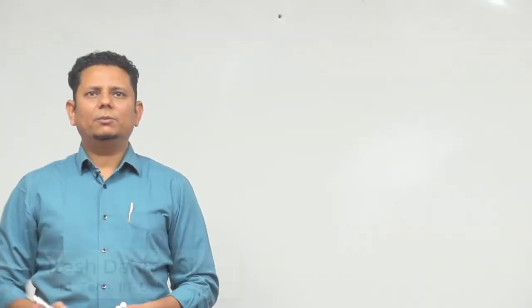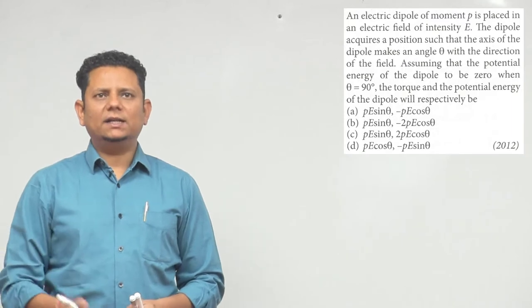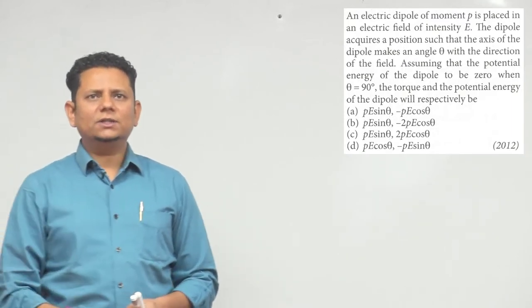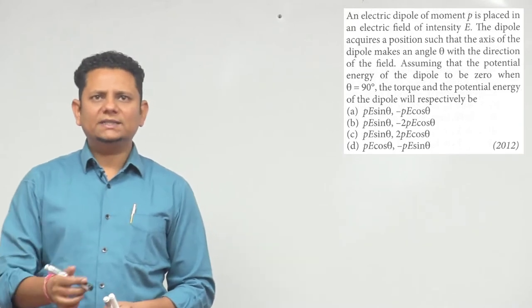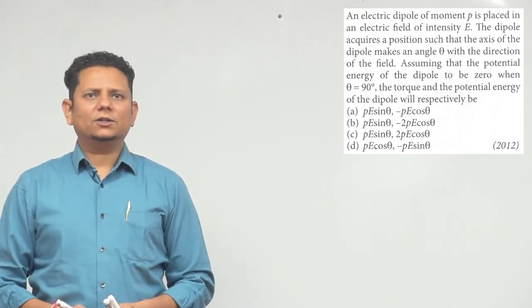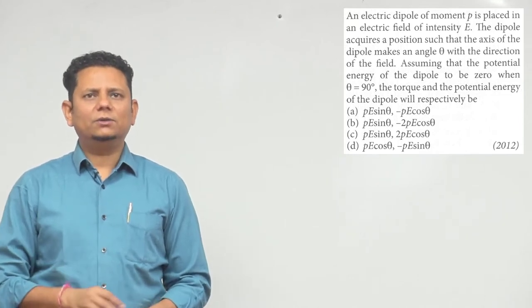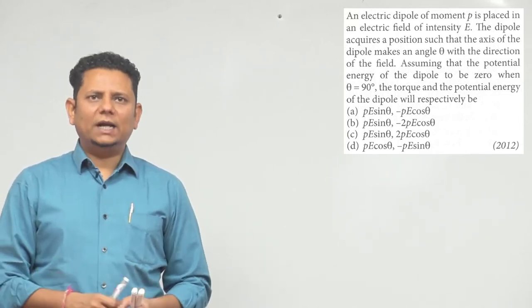Next question, 2012 question says: An electric dipole of moment P is placed in an electric field of intensity E. The dipole acquires a position such that the axis of the dipole makes an angle theta with the direction of the field. Assuming that the potential energy of the dipole to be equal to zero when theta is equal to 90 degrees.